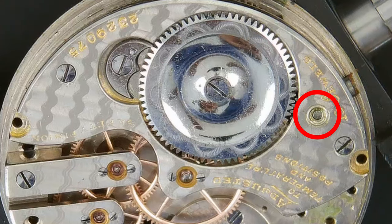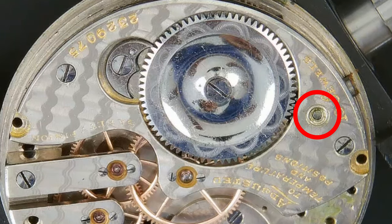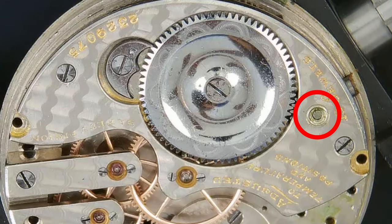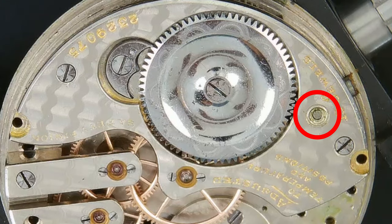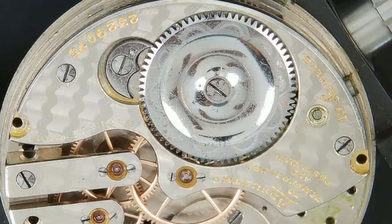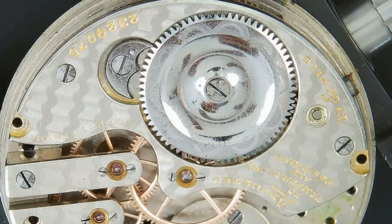Now, this bushing. The upper arbor for the winding works sits in this bushing. And over time, the bushing can become oval-shaped due to all the torque and winding forces bearing on it. This causes the winding works to tilt, and I believe this is causing our watch's winding issues.